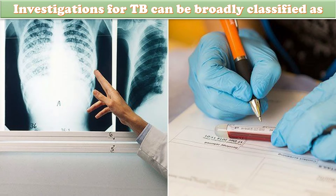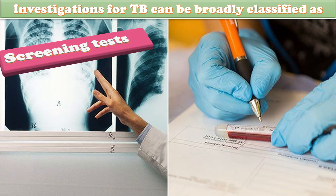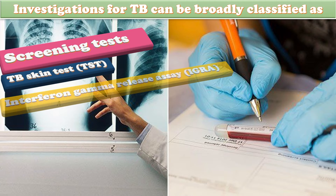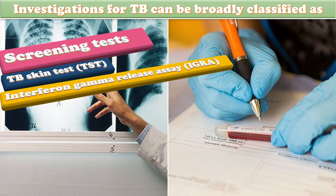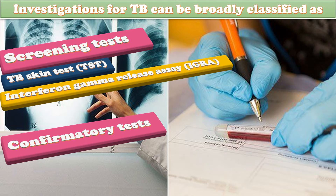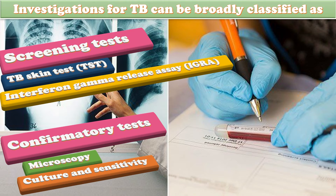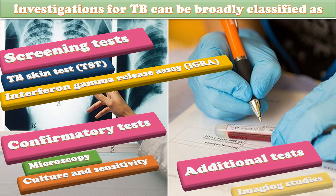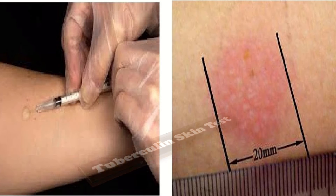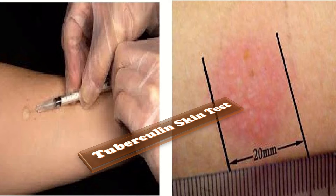The investigations for tuberculosis can be broadly classified as: first, screening tests, which include the TB skin test and interferon gamma release assay (IGRA); and second, confirmatory tests, which include microscopy, culture, and sensitivity. Additional tests include imaging studies. The tuberculin test involves administration of purified protein derivatives at a conventional dose intradermally.